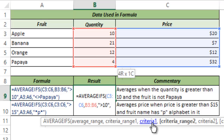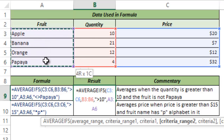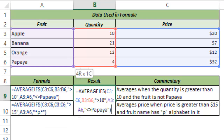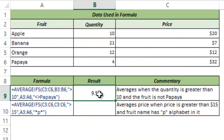Now I check for another criteria, which is that the fruit should not be equal to papaya. So my CRITERIA_RANGE2 is all these fruits. I hit comma and specify the criteria — since I'm using the not-equal-to operator, this should be within double quotes — and I type not equal to papaya. I then close the parenthesis and hit Ctrl+Enter, which gives me 9.5.